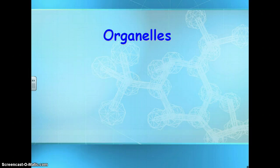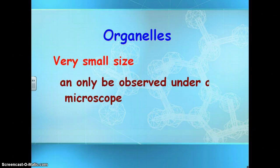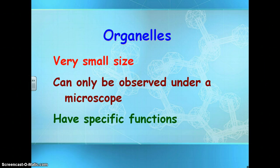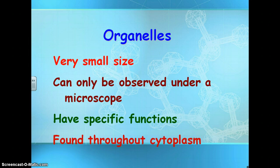Let's talk about the organelles. They're very small in size and can only be observed under a microscope. They all have specific functions, but they work together to make the cell work. They're found throughout the cytoplasm in the cell.